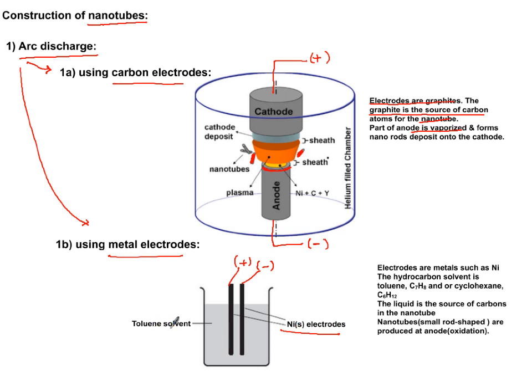The electrodes are extremely close to each other, and this time we have a hydrocarbon solvent. Toluene is a benzene with a methyl group attached to it. You could also use cyclohexane instead.